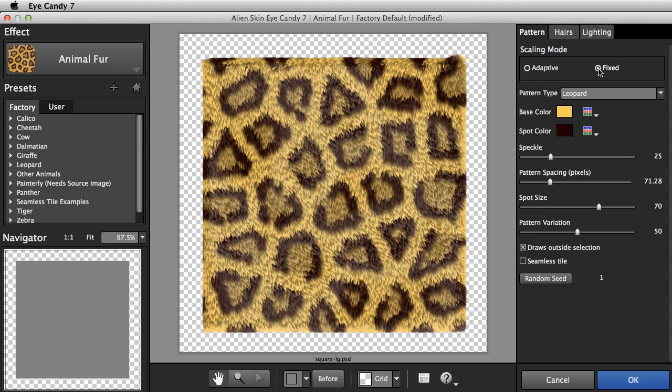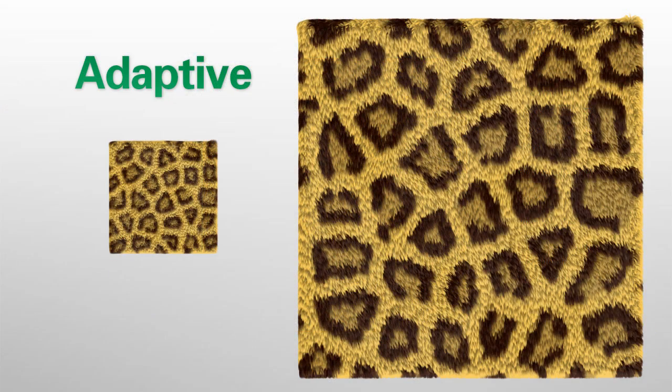Let's try it with this leopard fur. Here I use the factory default preset for animal fur, which is in adaptive mode. I applied it to images of different sizes, as you can see. I ended up with the same number of spots.